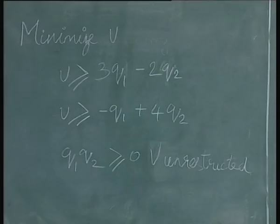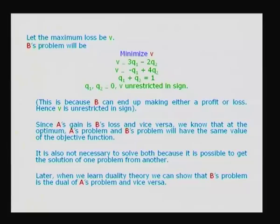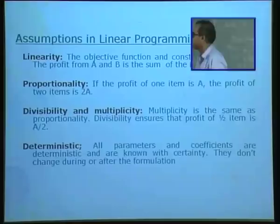We have now seen four linear programming formulations with different types of objective functions, constraints, and variables. Going back to B's problem — minimize V ≥ 3Q1 − Q2, etc. — since A's gain is B's loss, the optimum values of both problems are equal, so it is not necessary to solve both. Later, duality theory will formalize this: B's problem is the dual of A's problem.